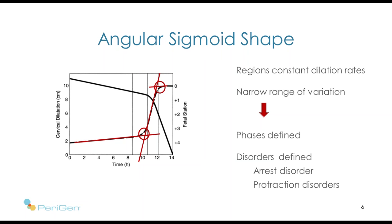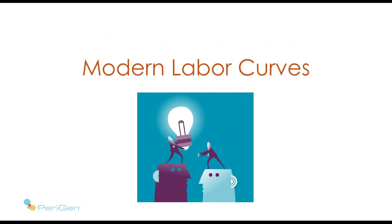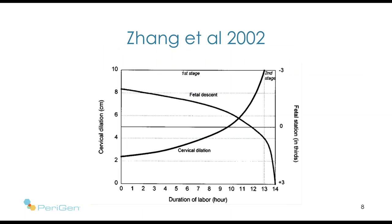Contemporary researchers have borrowed that idea — how does dilation and station change over time in labour — and have created new labour curves which have challenged some of these concepts. This is the first publication of the new modern labour curves, published by Dr. Zhang in 2002. For this set of curves for nulliparous women, there are no straight lines and no point of abrupt change in the rate of dilation. There's a gradual exponential rise in the rate of dilation over time.